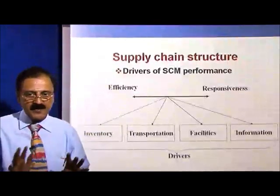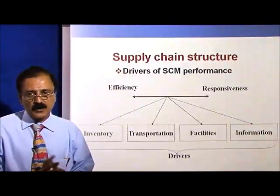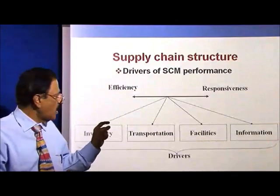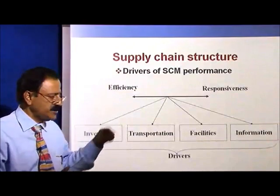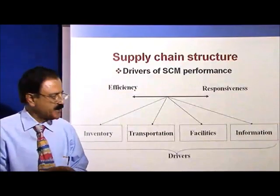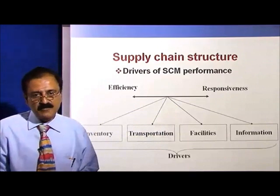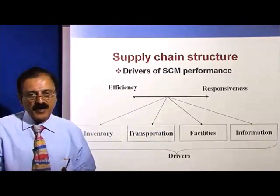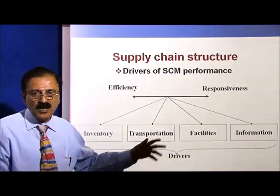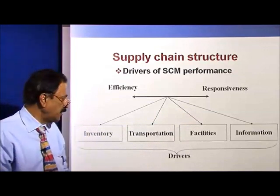Supply chain structure — what are the drivers of supply chain performance? To recollect, we have two types. One is efficiency, which means it is cost-based. The other is responsiveness, which means how fast we can deliver in the market. This is more demand-oriented from the customer.